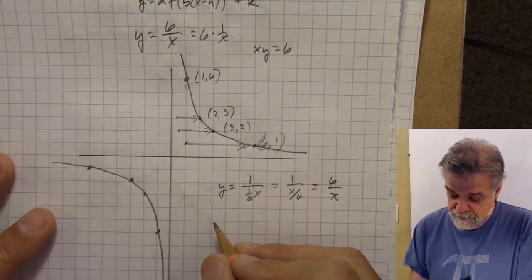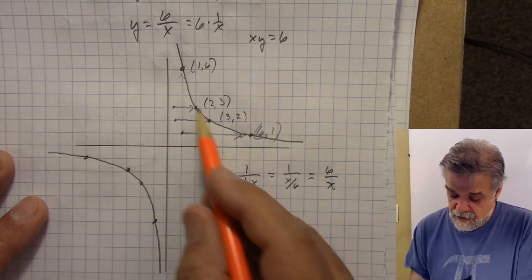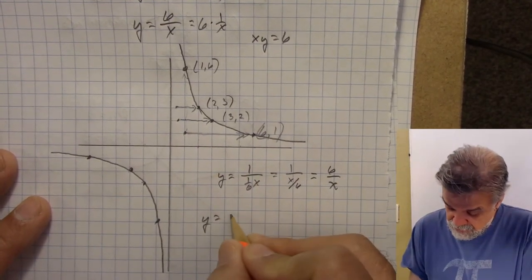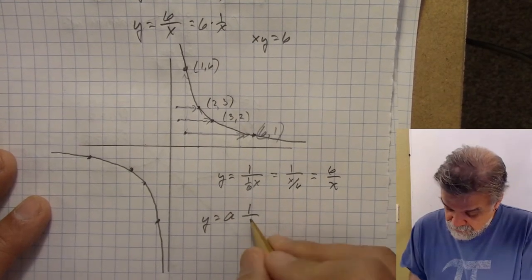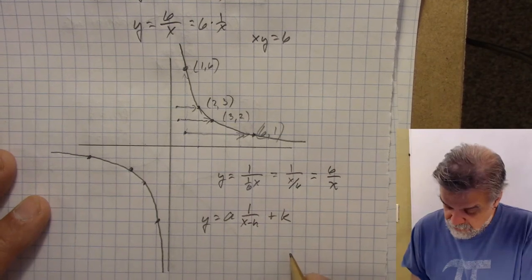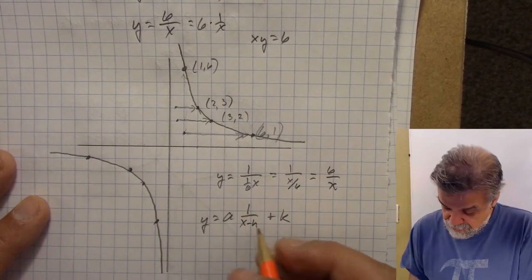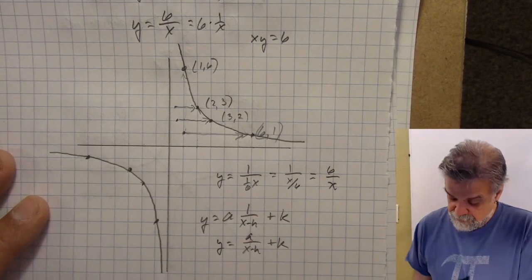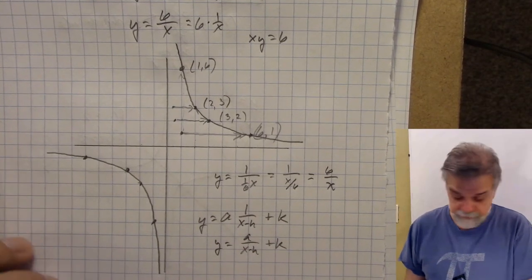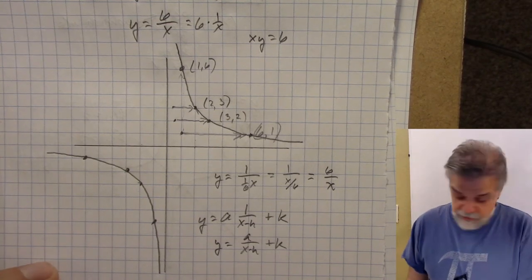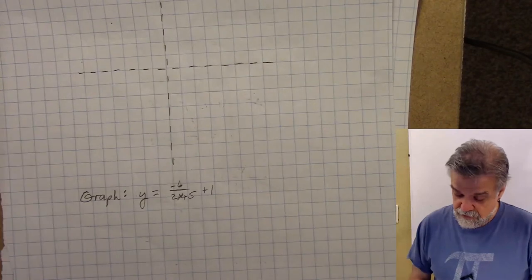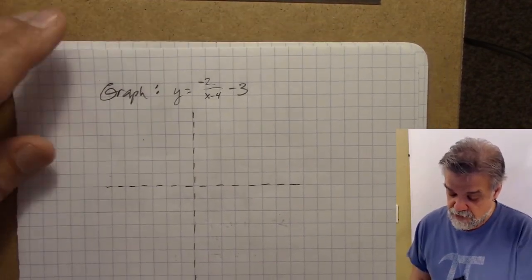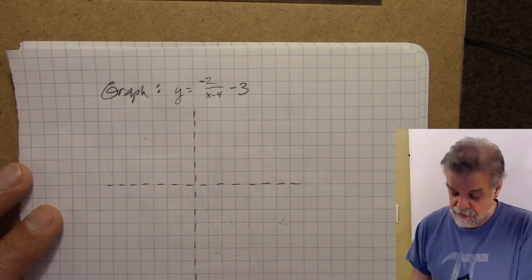That means we can describe any transformation of y equals 1 over x as y equals A times 1 over (x minus H) plus K, or rewritten as y equals A over (x minus H) plus K. Let's use this to graph the function y equals negative 2 over (x minus 4) minus 3.